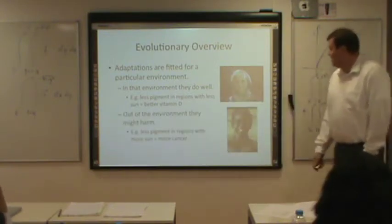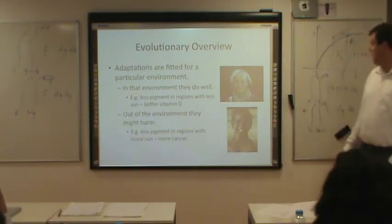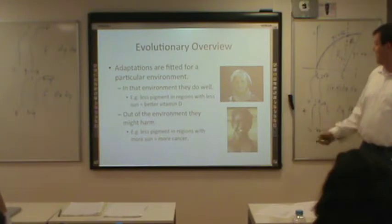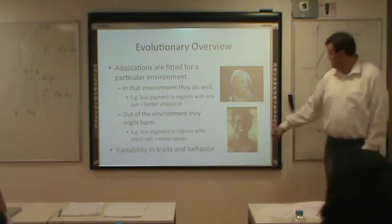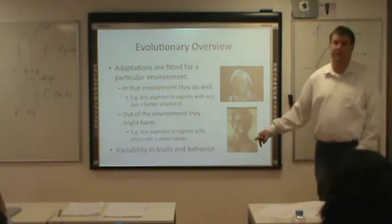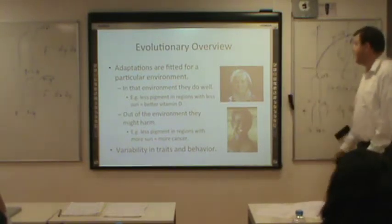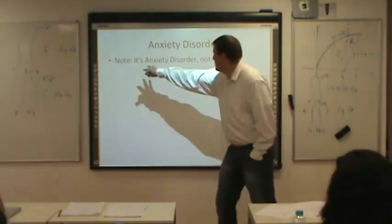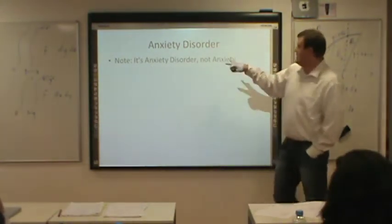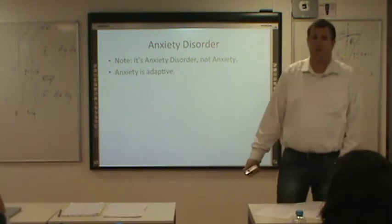Out of the environment, traits might harm. So you get less pigment in regions with less sun. If you put those people in areas with more sun, they get more cancer. There's variability in traits and behavior — people closer to the equator typically have darker skin. Now, anxiety disorder — notice this is anxiety disorder, not anxiety. Anxiety itself is adaptive.